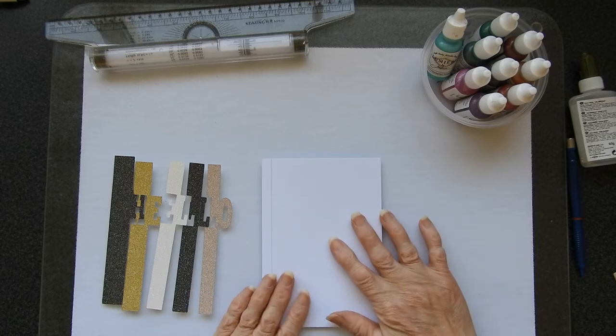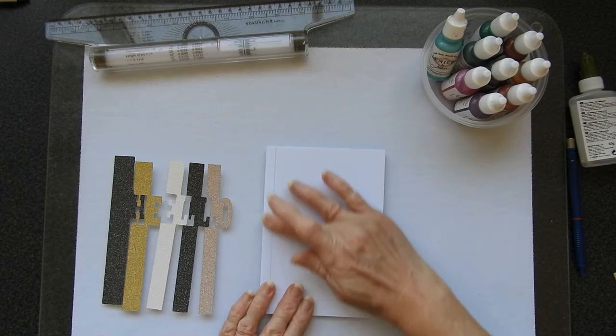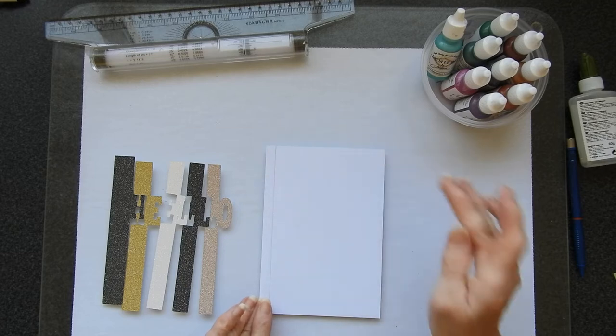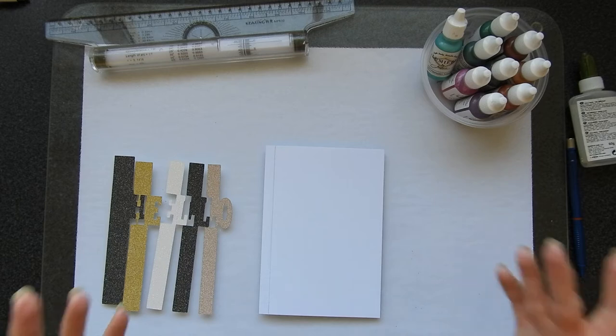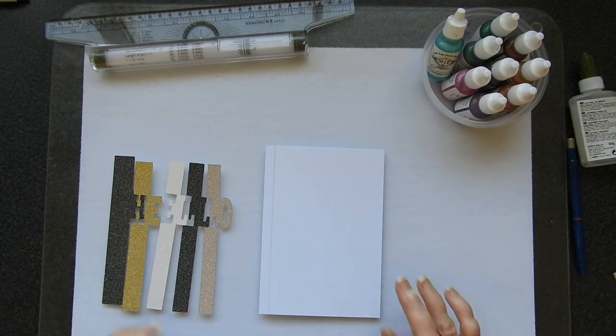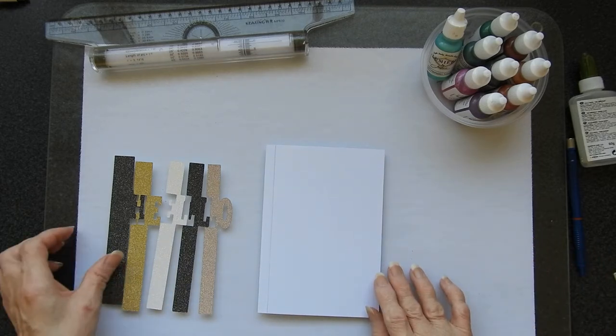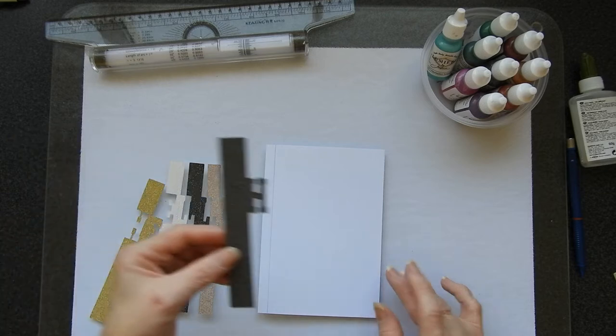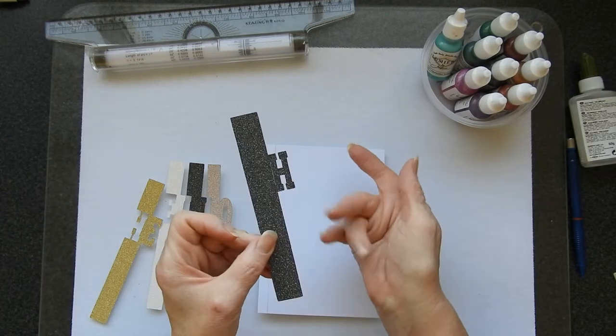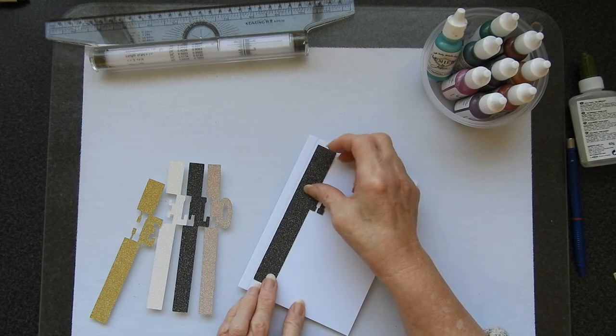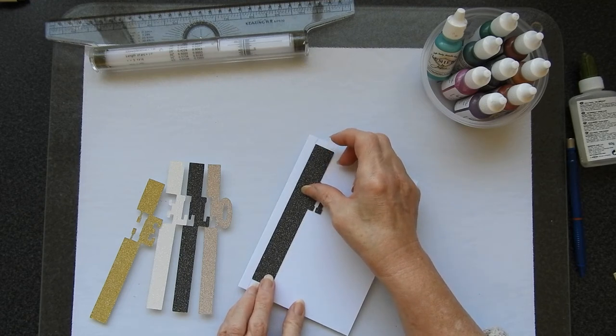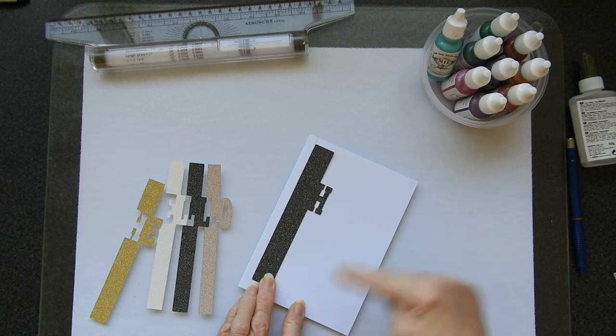So I have an oversized card base. This just happens to be a piece of card that was bigger than a card base would normally be for me but not enormous. So I just decided to use that as a card base to start with and I have these strips. Now you can see there's a letter H on there and what I want to do is put it down on this card and the chances are I will trim the top and the bottom off afterwards but I might not.